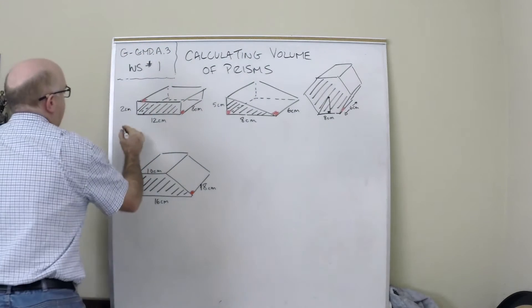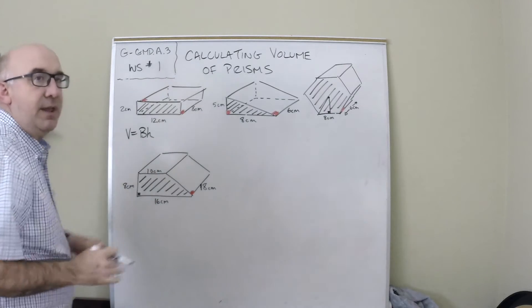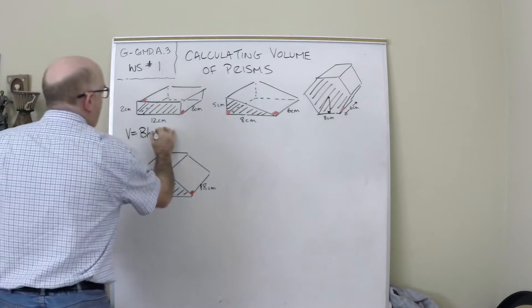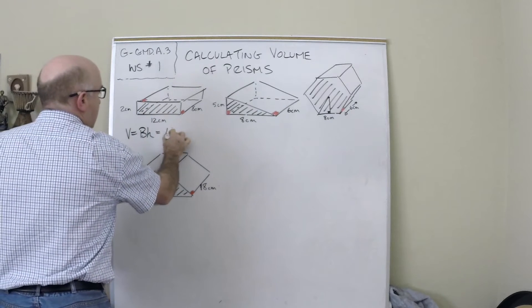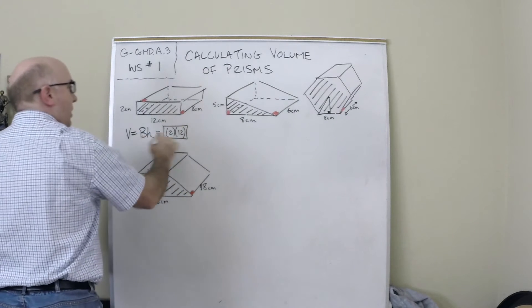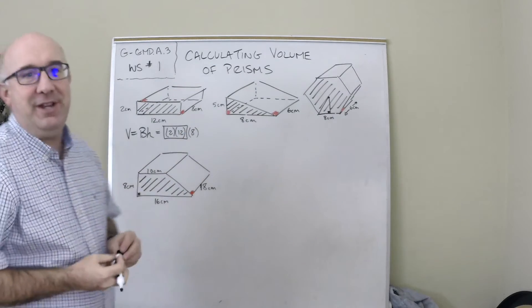The idea is the volume equals big B, which is the area of one base times the height. And so I'm going to calculate what I have shaded here, which is 2 times 12. I'm going to put a box around that to represent the base part. And then my height is 8.